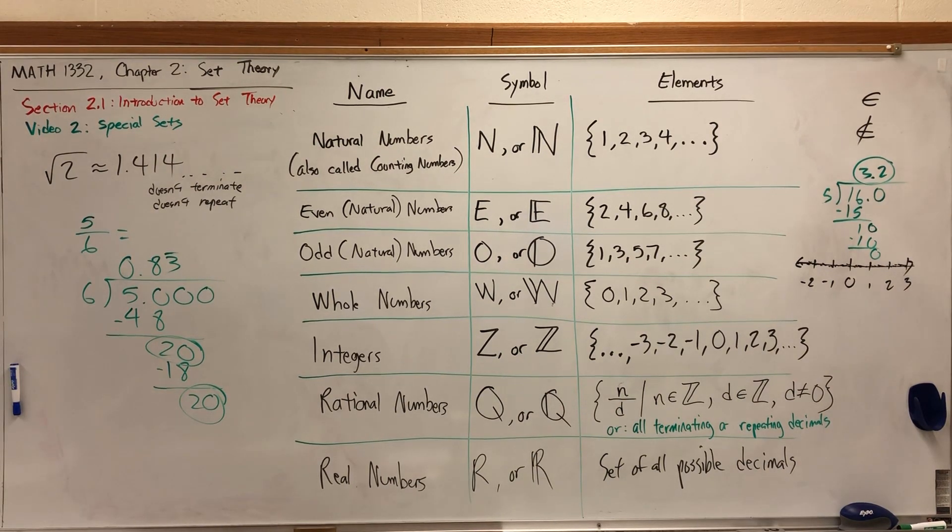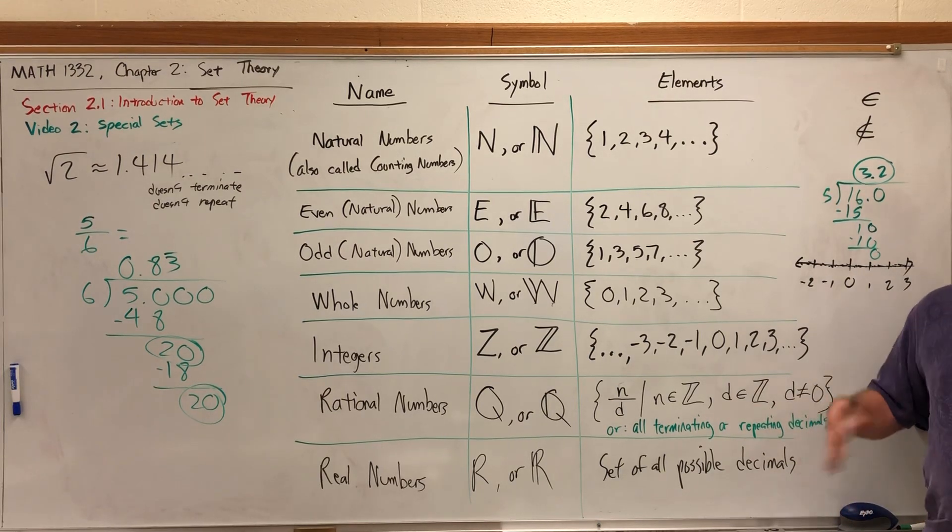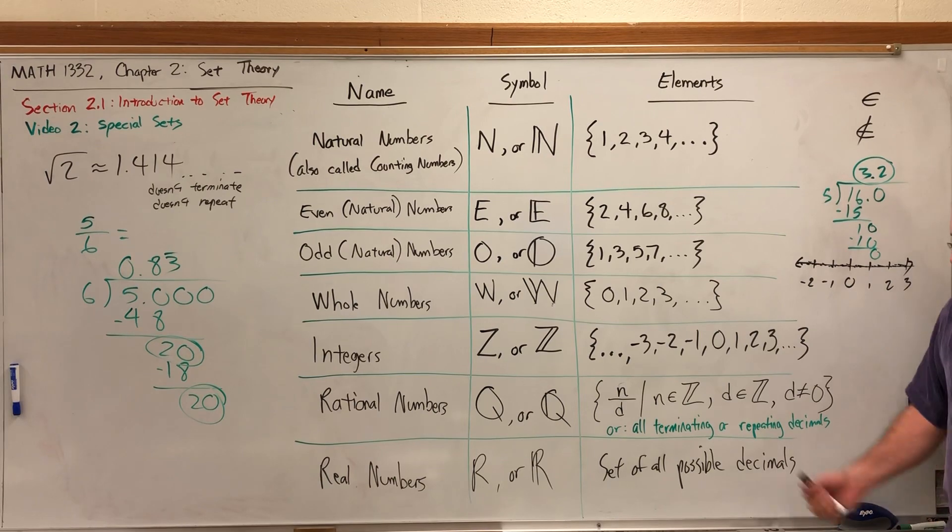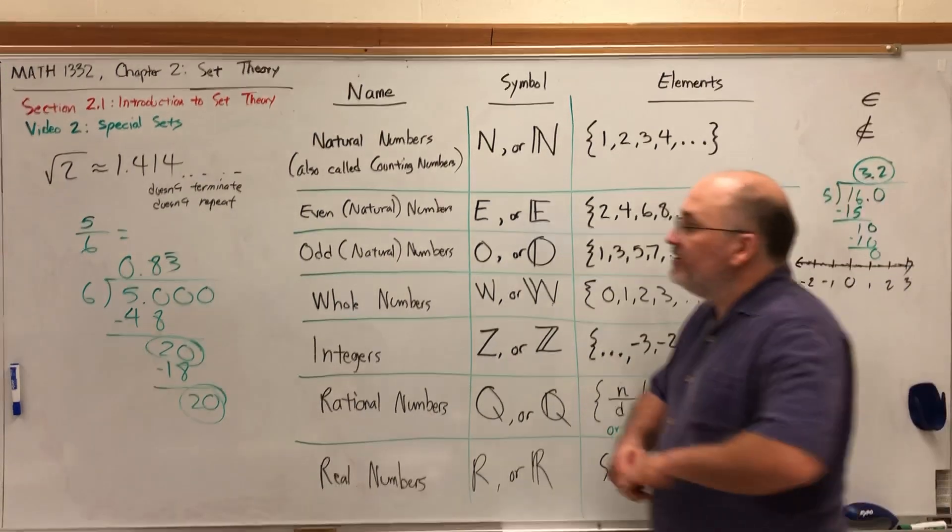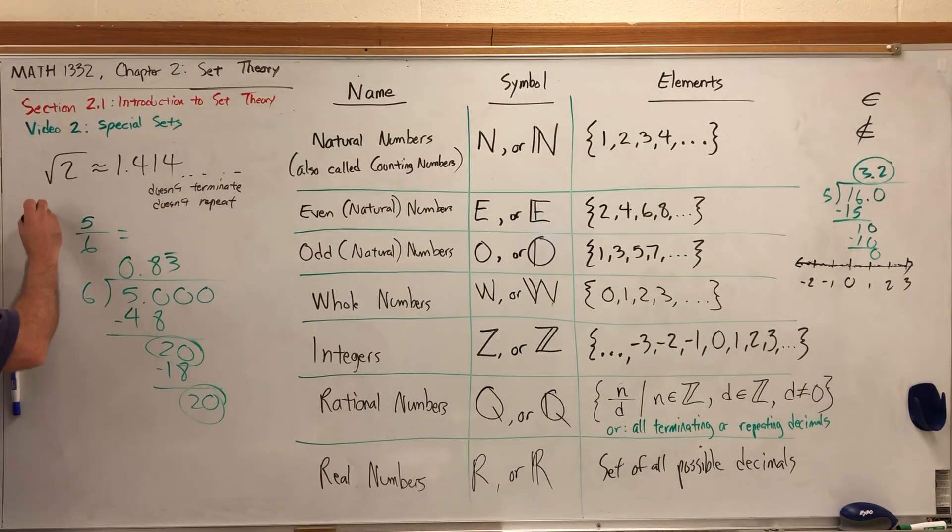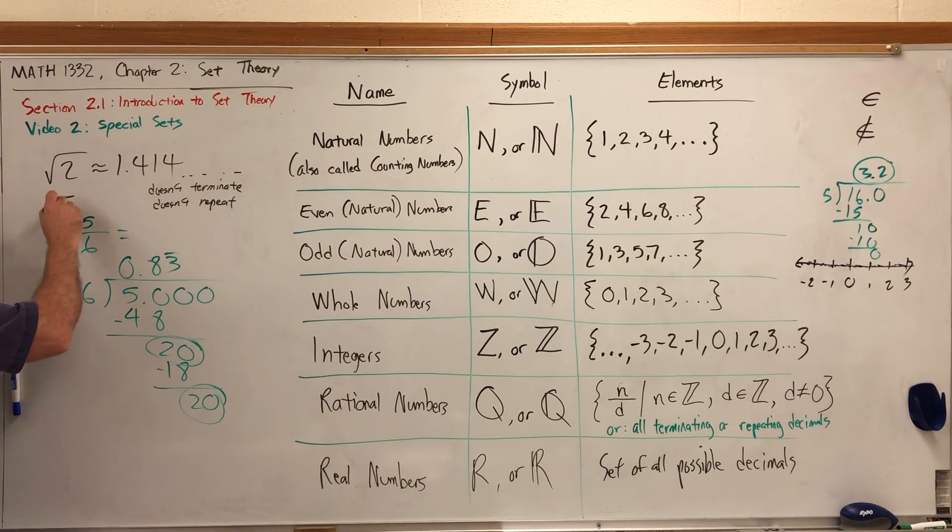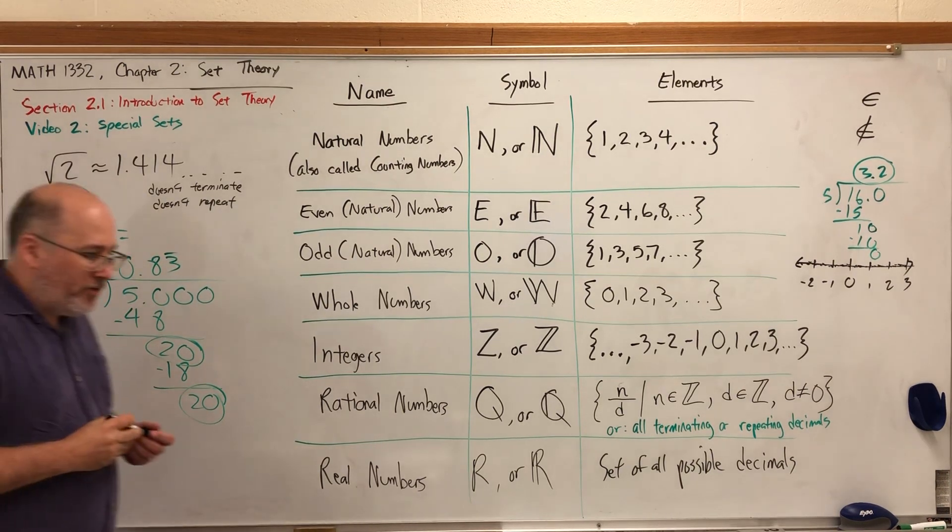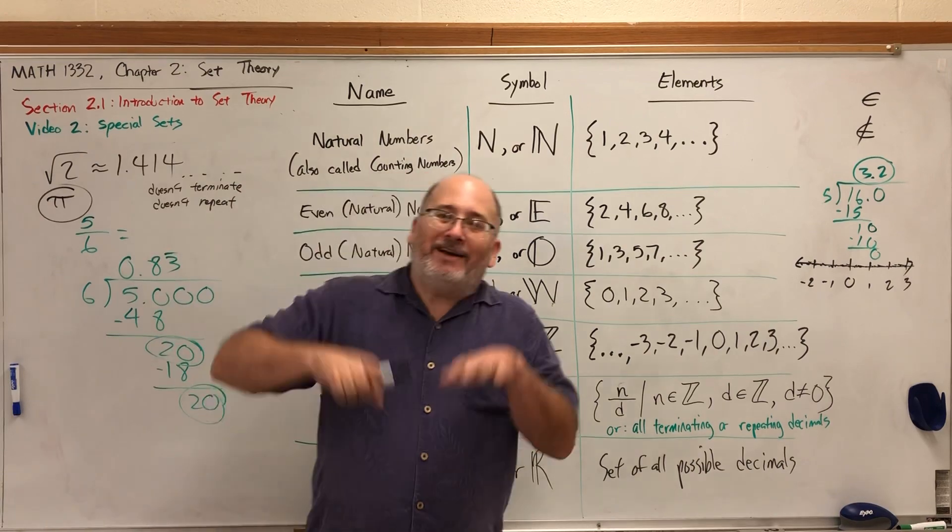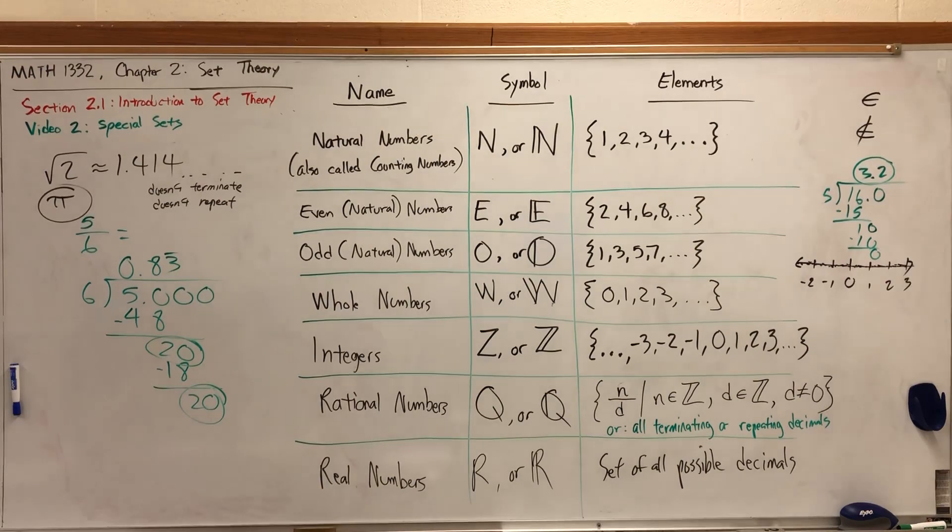When we add the fractions, we pick up a lot of decimals, but the decimals we pick up either end or repeat. There are a lot of decimals that do neither. Sprinkle those in, and we get what are called the real numbers. By the way, the most common irrational number is pi. Most people think pi is 3.14. Pi is approximately 3.14, but as a decimal, it never ends and it never repeats. Hence, it is not a rational number.